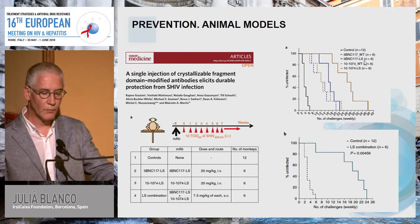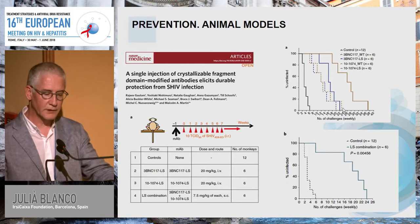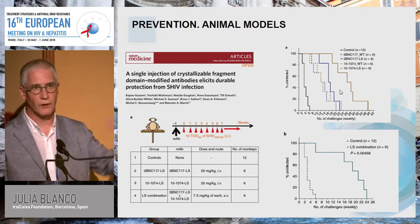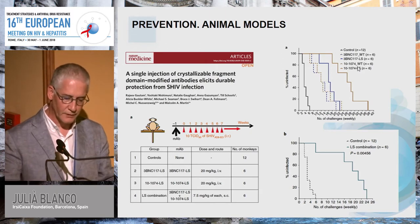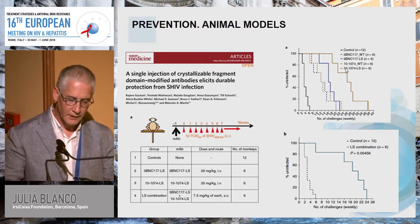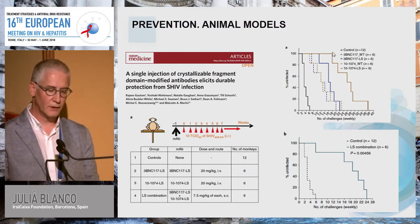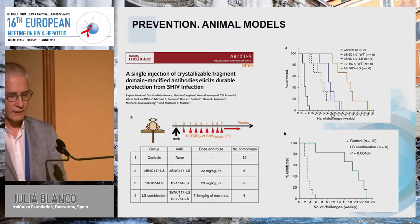The authors used antibodies in wild-type form and also antibodies modified to increase half-life. Wild-type antibodies delay infection, but the modified antibodies showed extended half-life and therefore extended activity. For the combination of 3BNC and 10-1074, after 20 challenges, no animal was infected with HIV—a long-lasting protection.